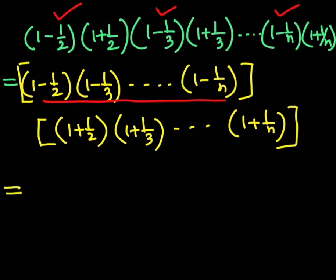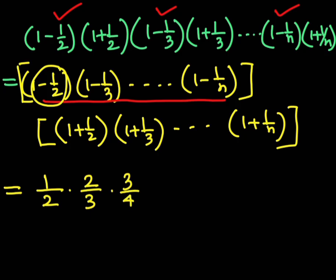Now we simplify each group. The first group is actually: one by two, then two by three, then three by four, and so on, with the last term being n minus one by n. This is the first product.